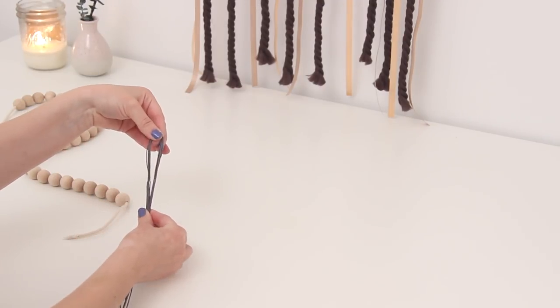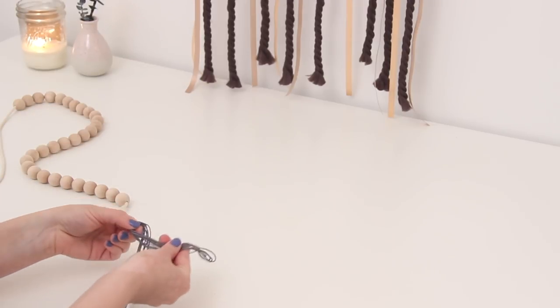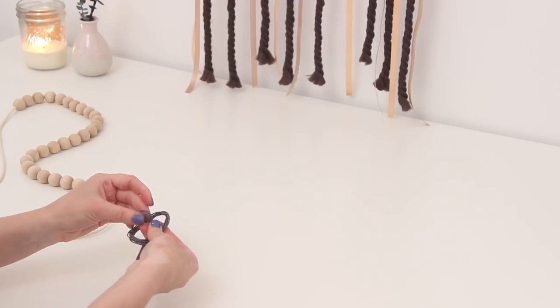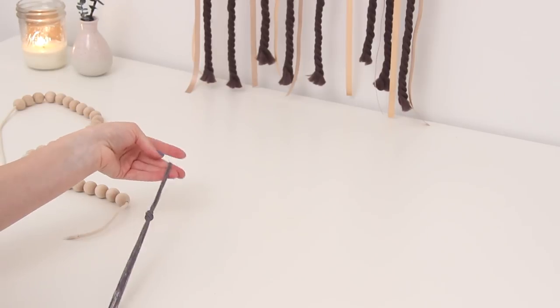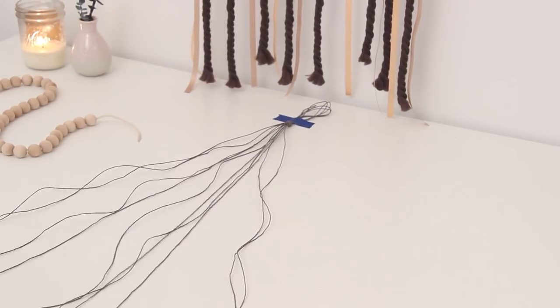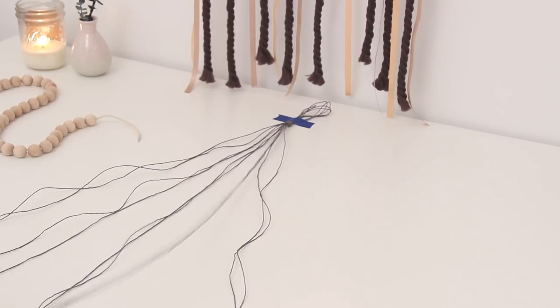Line them all up and fold them in half so all the loose ends are at the bottom and you have a loop at the top. Wrap that around itself and tie a knot and pull it tight. You'll have a loop at the top which is what you'll hang your planter up by. Take this and tape it down to your work surface, then untangle the string and separate it into five groups of two pieces each.